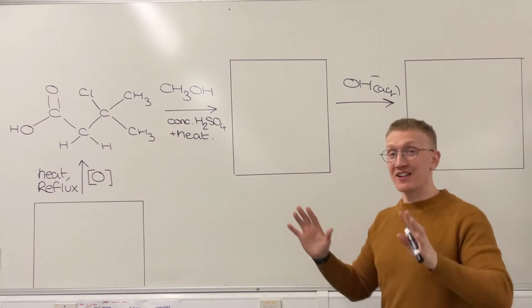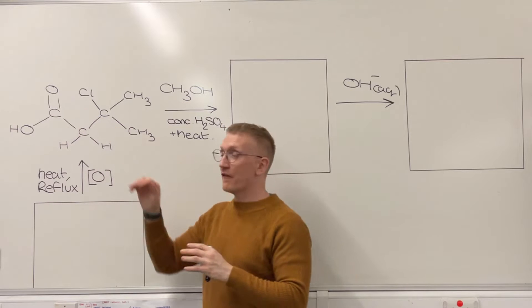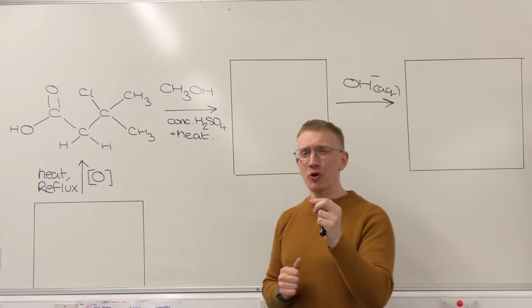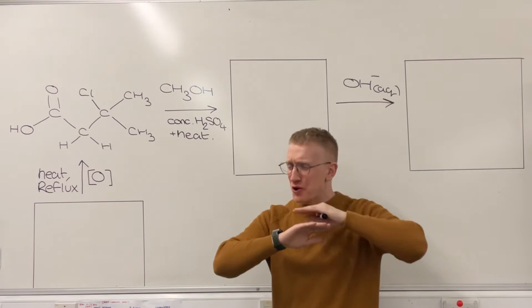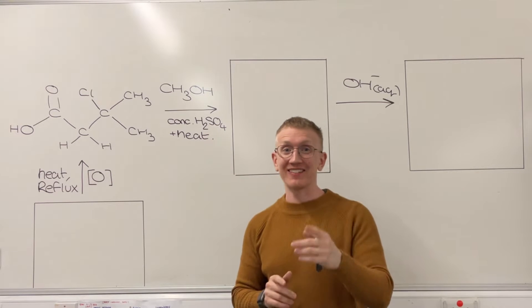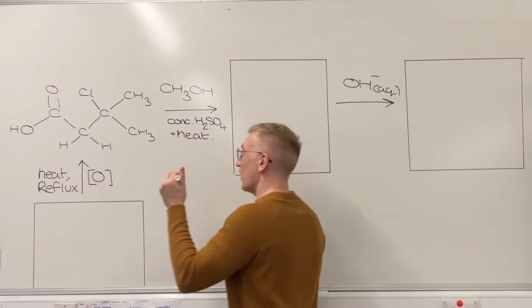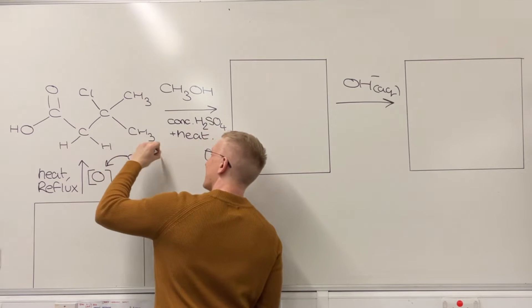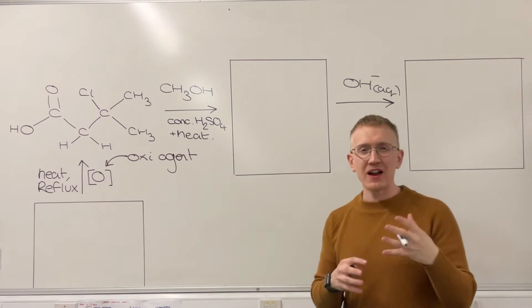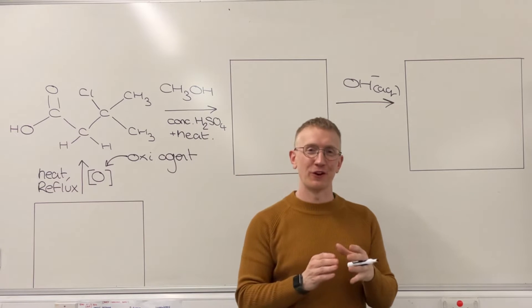So to get started on the left hand side, I need to think about what functional groups could be formed by the conditions mentioned on the arrow but also what functional groups would have no involvement with this set of conditions. We have the O in square brackets, which is an oxidizing agent. This is likely to be acidified potassium dichromate, and we're heating under reflux.